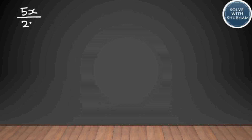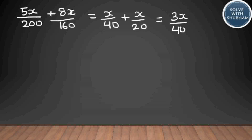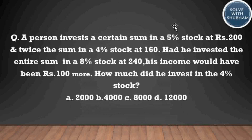Total income from both investments is 5x/200 + 8x/160, which simplifies to x/40 + x/20 = 3x/40. In the second scenario, the entire sum 3x is invested in an 8 percent stock at 240. His income would have been 100 more than 3x/40.